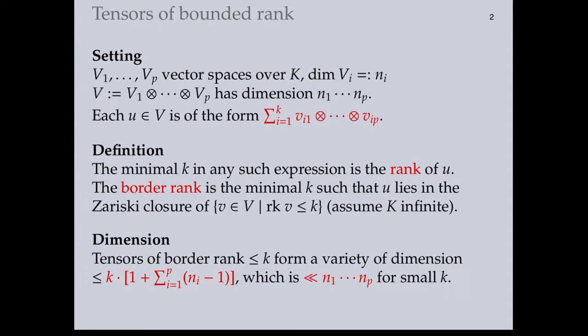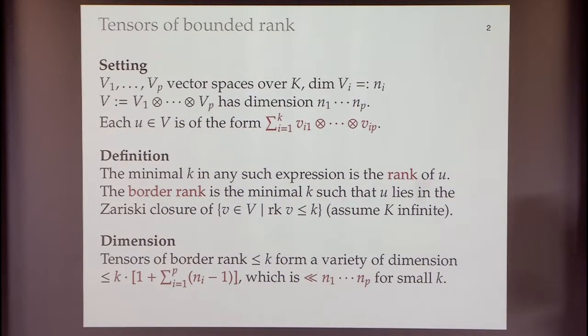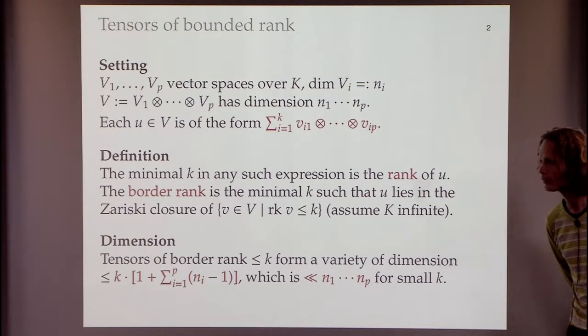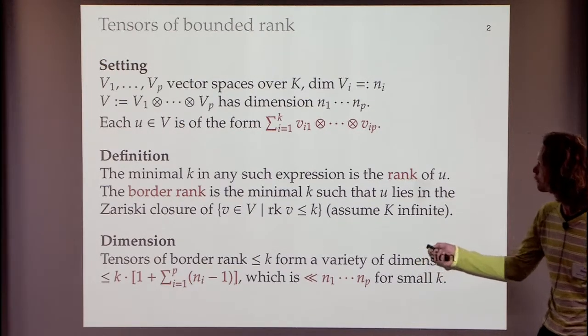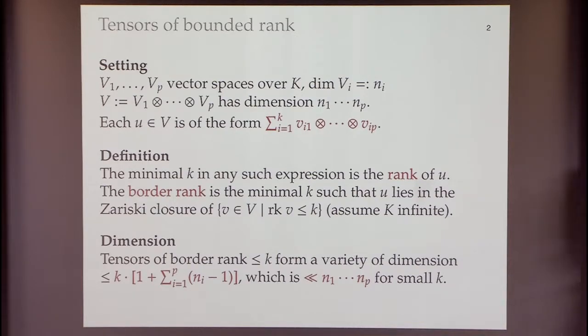The setting is the following. We have a couple of vector spaces V1 up to Vp over a field K, where the dimension of Vi is Ni. We'll be looking at the tensor product V1 tensor V2 all the way up to Vp, which is a large vector space of dimension N1 times N2 all the way up to Np. There's also a coordinate-based way of looking at tensors: the elements of this vector space are just p-way arrays of numbers with sides N1 times N2 all the way up to Np.